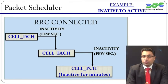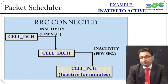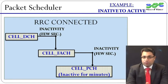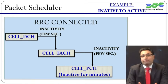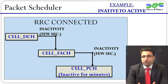In cell FACH state, the UE can use RACH and FACH common channels, but the bit rates are limited to around 30 kbps. The power consumption in cell FACH state is less than cell DCH, but it is still very high. Therefore, if inactivity is detected in this state, the UE is shifted to cell PCH state, which can be called a parking lot or standby state. In cell PCH, no resources are allocated to the UE from the network side. Therefore, the operator does not mind keeping it attached for several minutes.